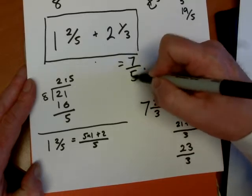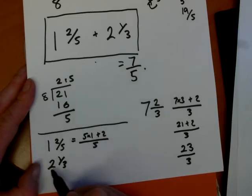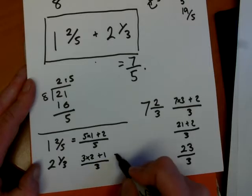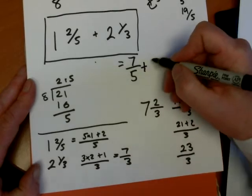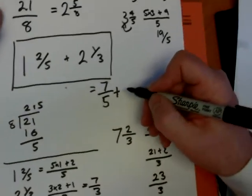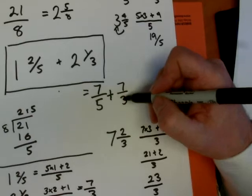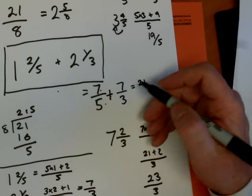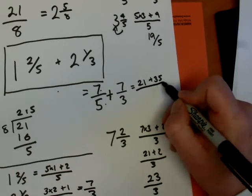So I'll write that there for the addition that comes. Then the 2 and 1 third, 3 twos is 6, plus the 1, 7 over 3, gives me 7 over 3. So I'm now adding together 7 fifths plus 7 over 3. Now we have to use a technique that we used earlier. I'm going to use the cross-multiplying technique. 3 times 7 is 21, 5 times 7 is 35, and that's all over 5 times 3, which is 15.